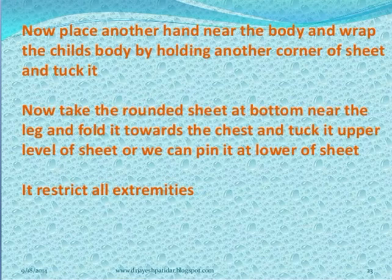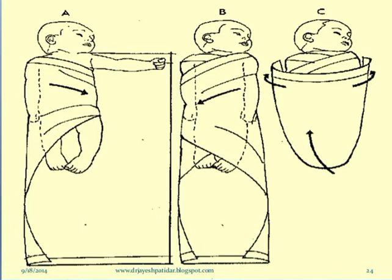Take the bottom corner of the sheet near the legs and fold it up. Tuck it from the sides and fold it on the neck side and then fold it over the front side to complete the mummy restraint.